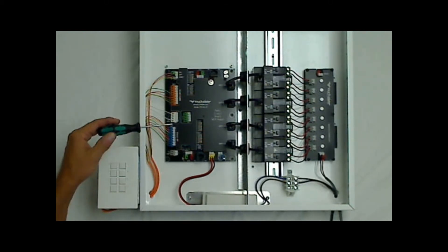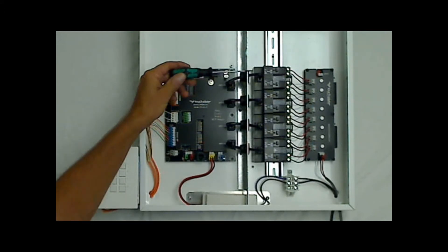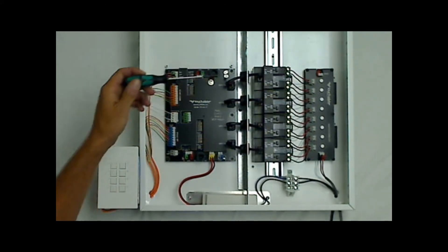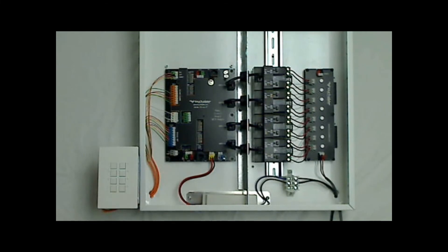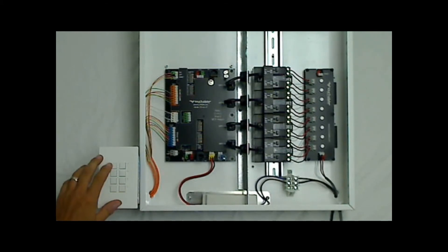The next set of dip switches is the options. In the options, number 7 will be the only one used. Number 7 reverses the order of the relays. The preset is relay number 1 being at the top. If number 7 is turned on, relay number 1 will now be at the bottom.